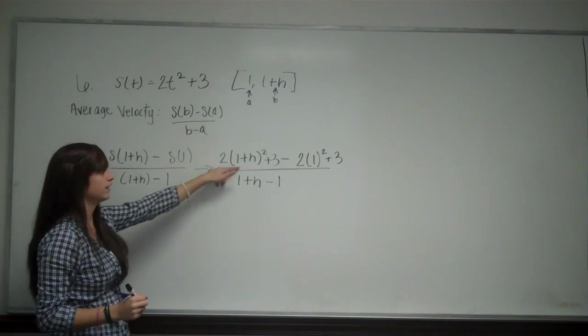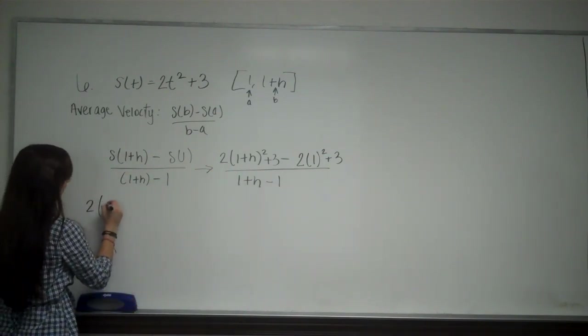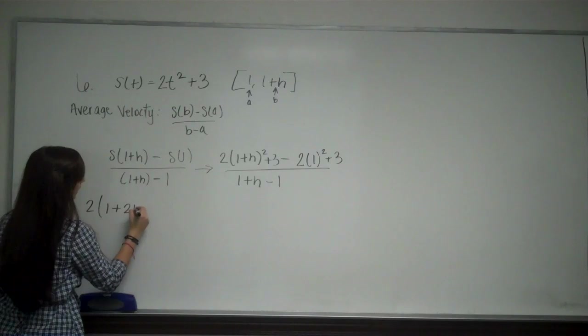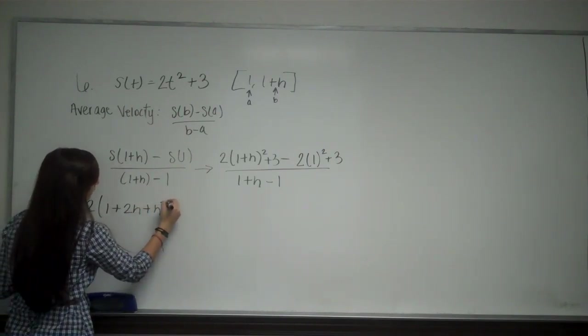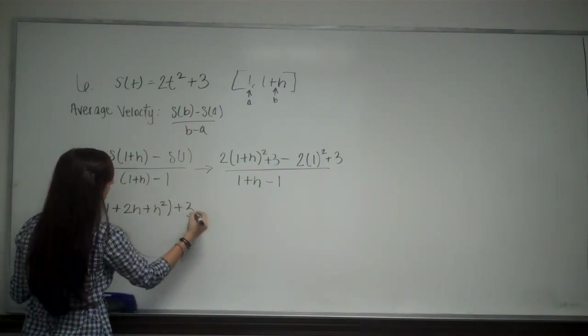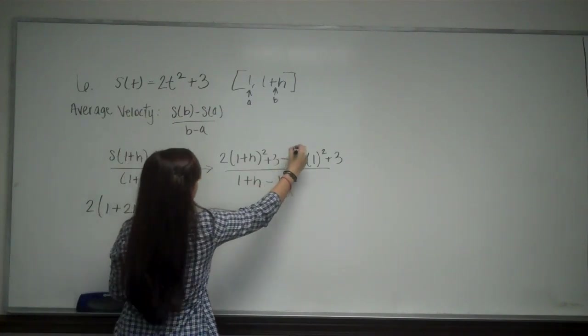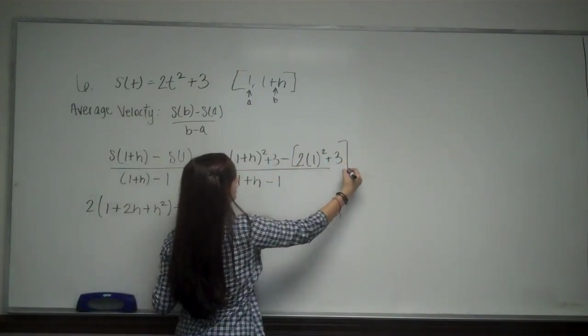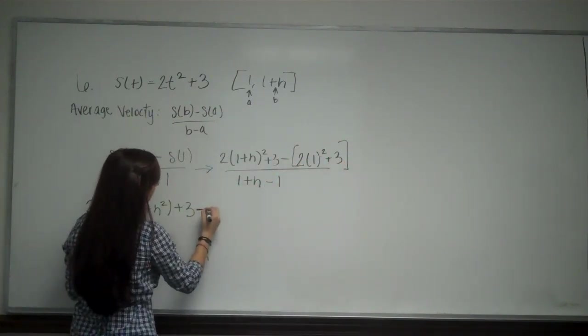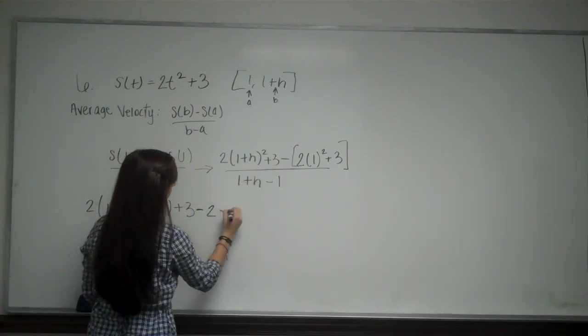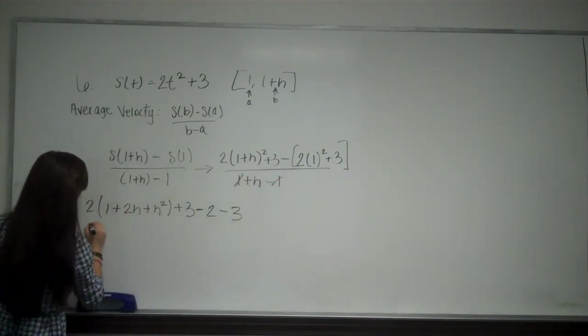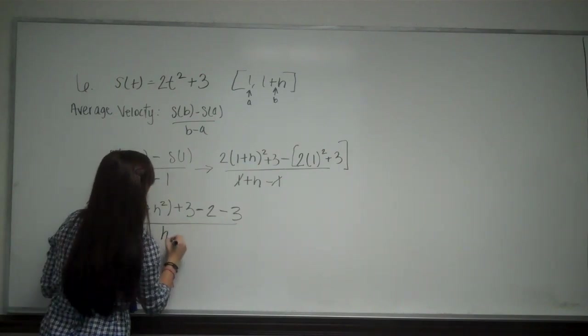For this, I'm going to FOIL out. So I have 2 times 1 plus 2h plus h squared plus 3. And now, this is going to be the minus to this whole equation. So it's going to be minus 2 minus 3. Down here, my 1's canceled, and I'm just left with h.